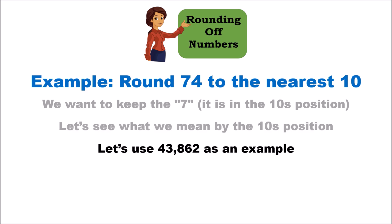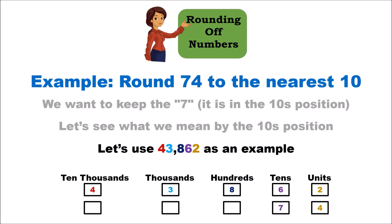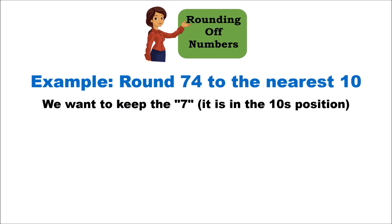To understand place value, let's use the number 43,862. The rightmost digit is the units place, then moving left: tens, hundreds, thousands, and ten-thousands. So in 43,862: the 2 is in the units place, 6 in the tens, 8 in the hundreds, 3 in the thousands, and 4 in the ten-thousands. Coming back to 74: seven is in the tens place and four is in the units place.